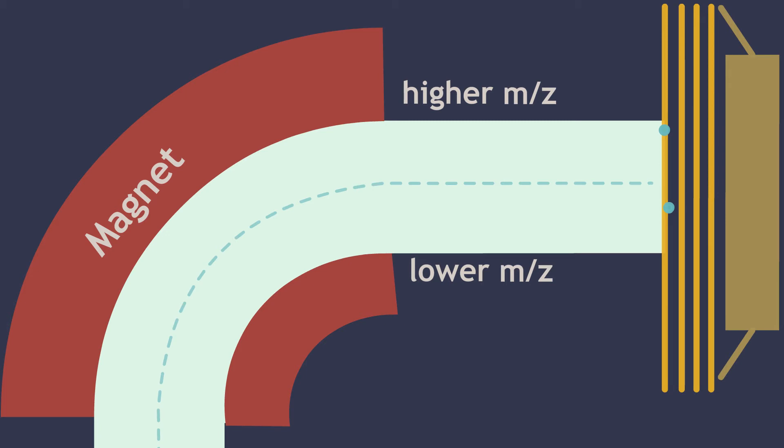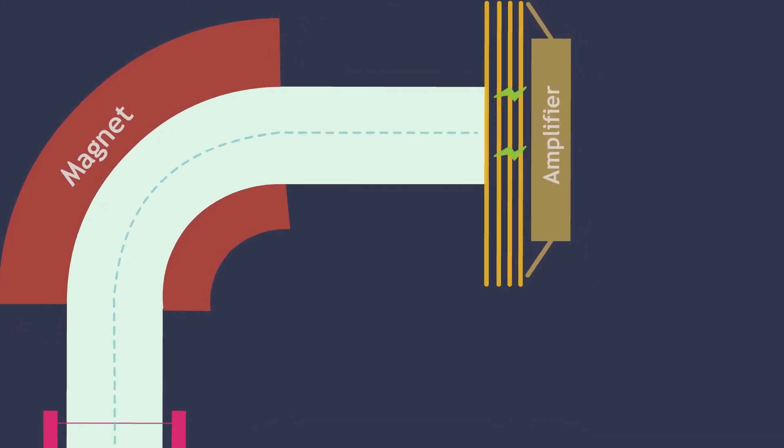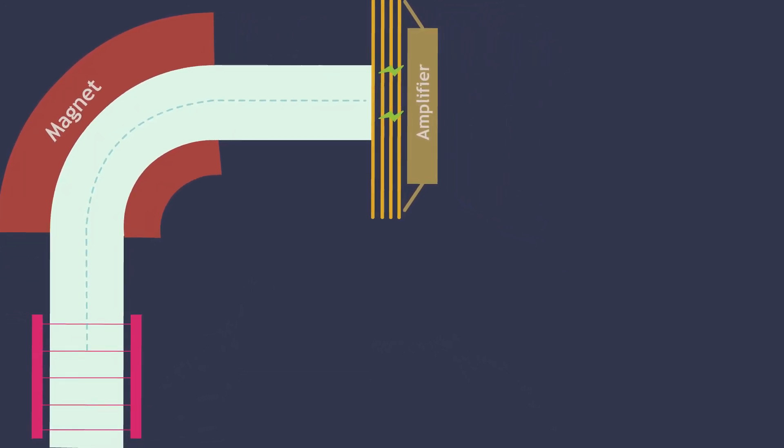Here, based on their position, a small electrical signal will be generated, which can then be amplified and recorded to construct a mass spectrum. Now, let's see how a mass spectrometry experiment provides data on the sample's molecular composition.